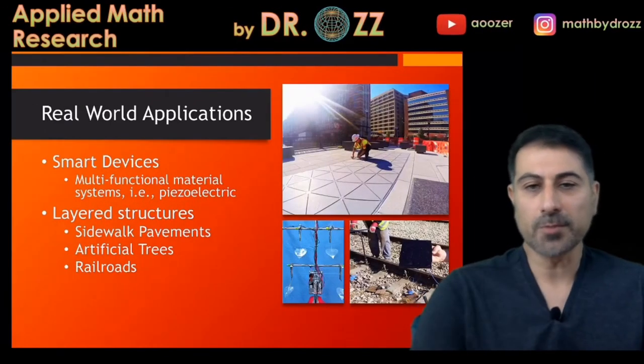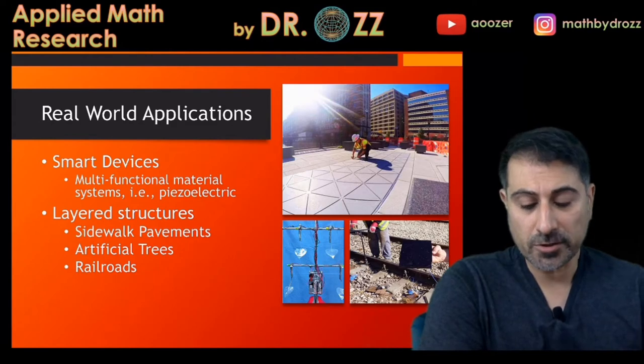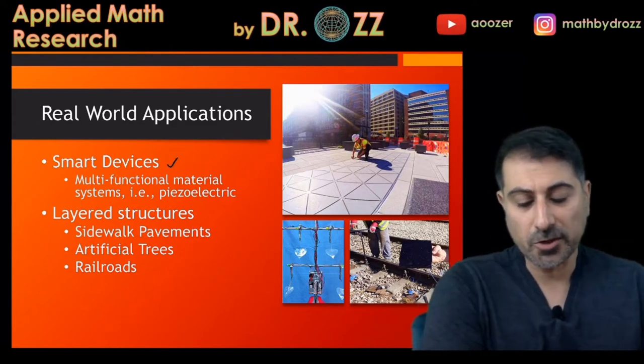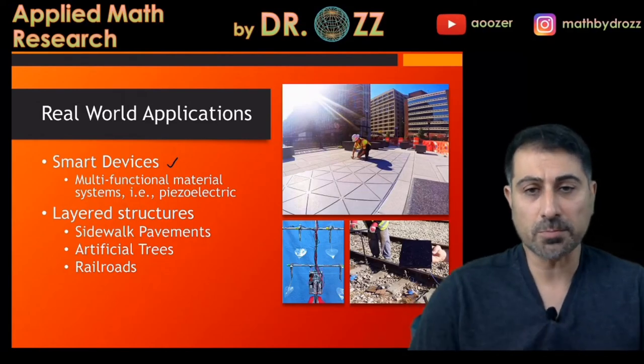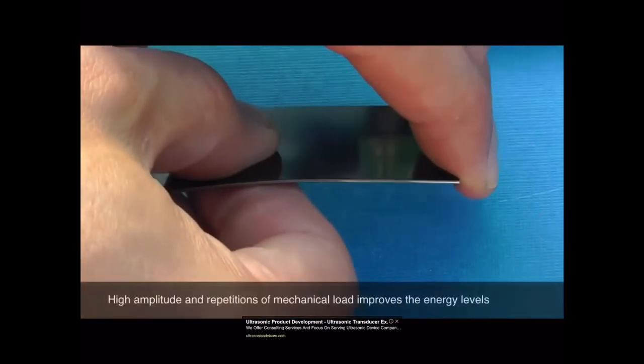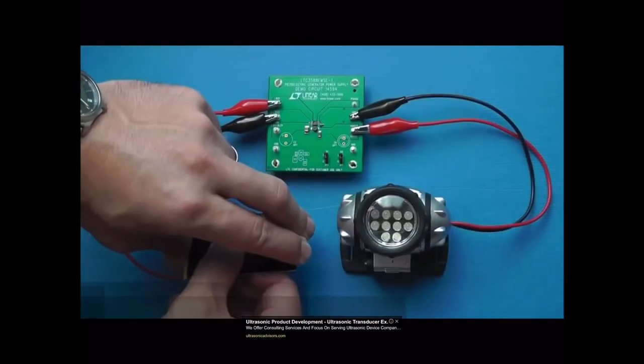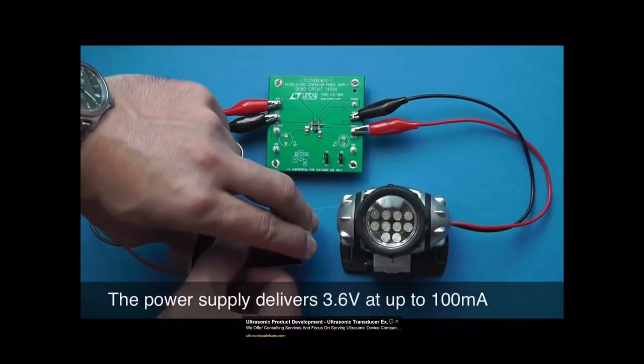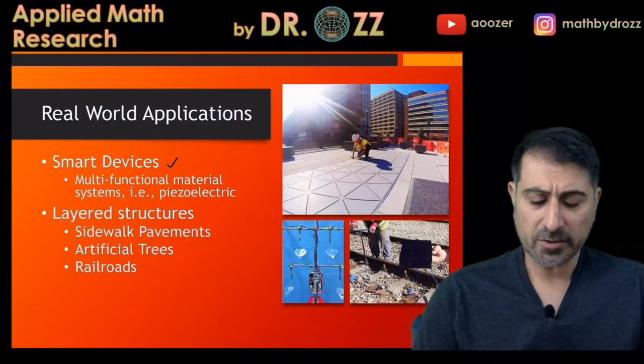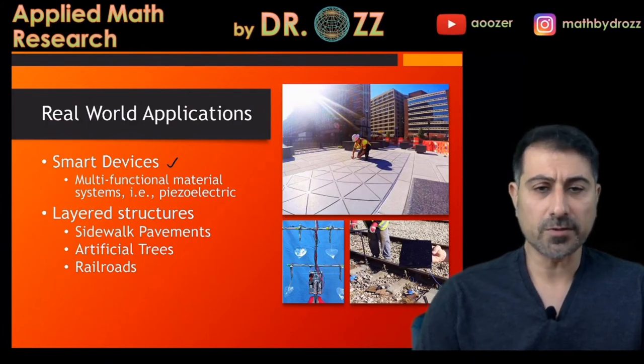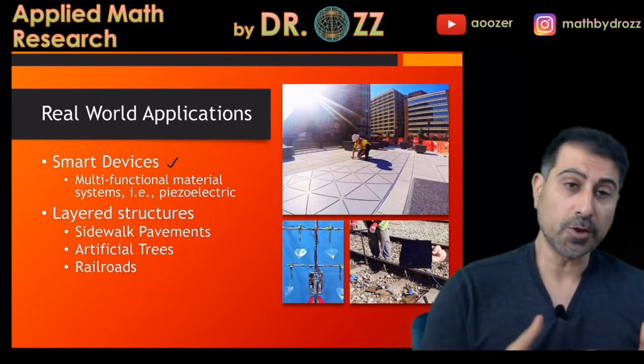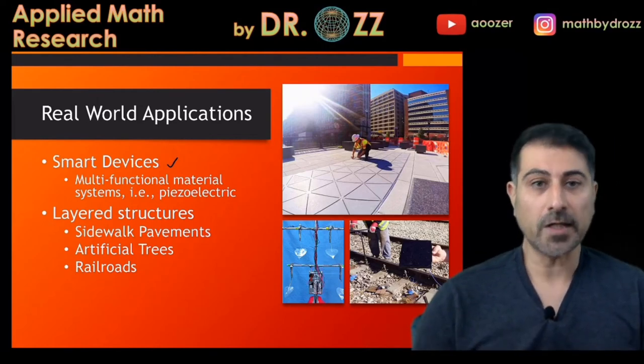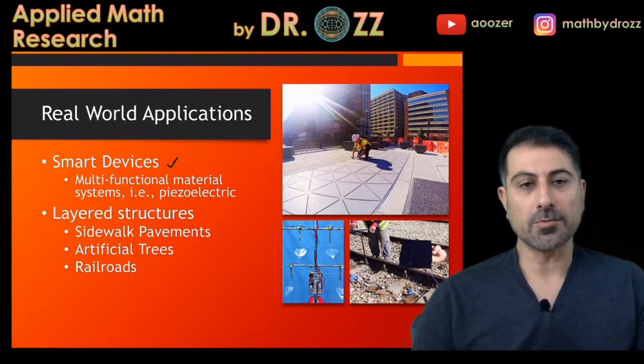Real-world applications vary from smart devices to layered structures. A smart device is a multi-functional material system that involves a piezoelectric layer in it. That's a smart material. And layered structures could be like sidewalk pavements and artificial trees, railroads, and the ultimate goal here is obviously to suppress the vibrations. But in the meantime, the inverse problem is to harvest the energy to create sustainable energy resources.